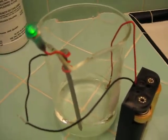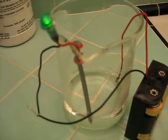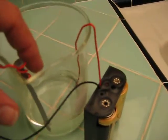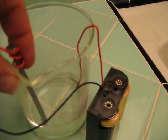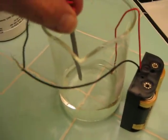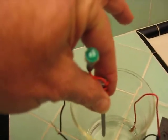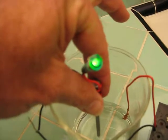You can see that the probe, the nail, is down into the electrolyte and when we remove it from the electrolyte, it goes out. Put it in, it goes on. Take it out, it goes off. Put it in, it goes on.